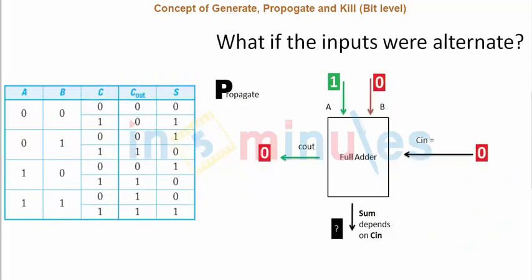Let's go ahead. Here I have a propagate signal. Now let's understand what does this mean. Look at the truth table clearly and tell me if your A and B alternate. What if my inputs alternate? If your A and B alternate, what is going to be your C out? That will give me these four cases. See, A is alternating, B is alternating.